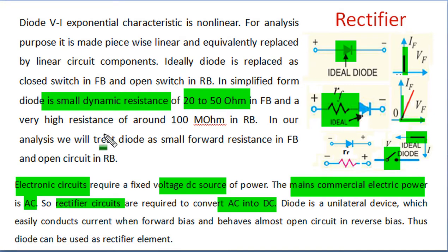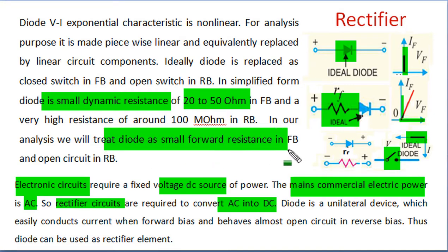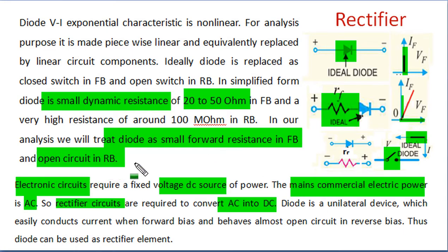We can say that in forward bias, the diode is treated as a small forward resistance of 20 to 50 ohm. When we apply reverse bias negative voltage to the diode and increase this voltage, there is no current in the circuit and we can say that diode behaves as an open switch. In this way, we can use the diode as a rectifier.